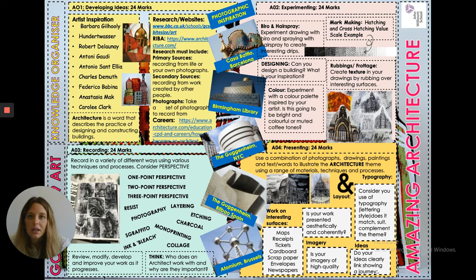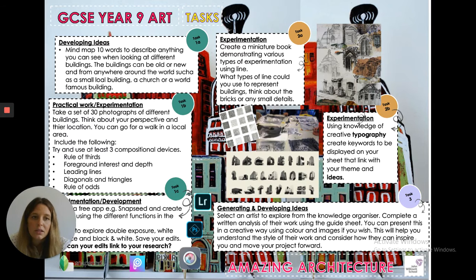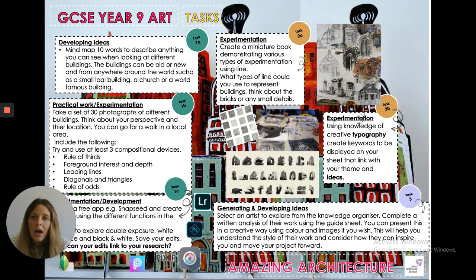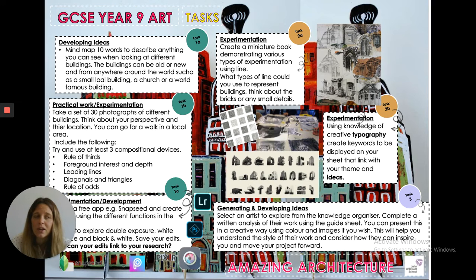The next thing is looking at what we want you to have a go at over the next few weeks before we return in September. There are tasks labelled 1A, 1B, 1C, 2A, 2B, and Task 3. First, for developing ideas, create a mind map with just 10 words describing anything you notice when looking at different buildings — just as a way to start generating ideas.